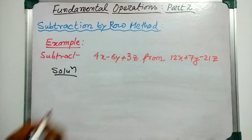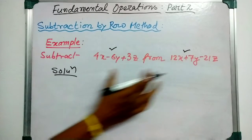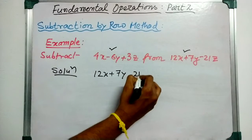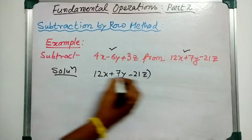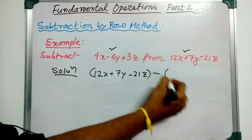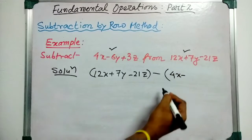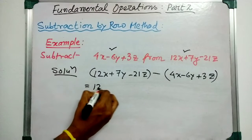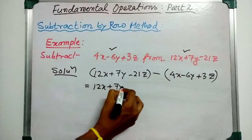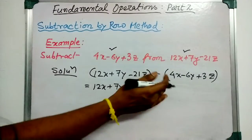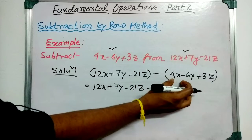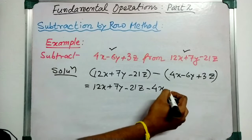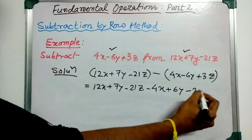Let us go for the solution. Here we have to subtract the second expression from the first. So we write 12x plus 7y minus 21z, then put a minus sign and write the expression to be subtracted in brackets: minus (4x minus 6y plus 3z). Now removing the bracket and changing signs: 4x becomes minus 4x, minus 6y becomes plus 6y, and plus 3z becomes minus 3z.